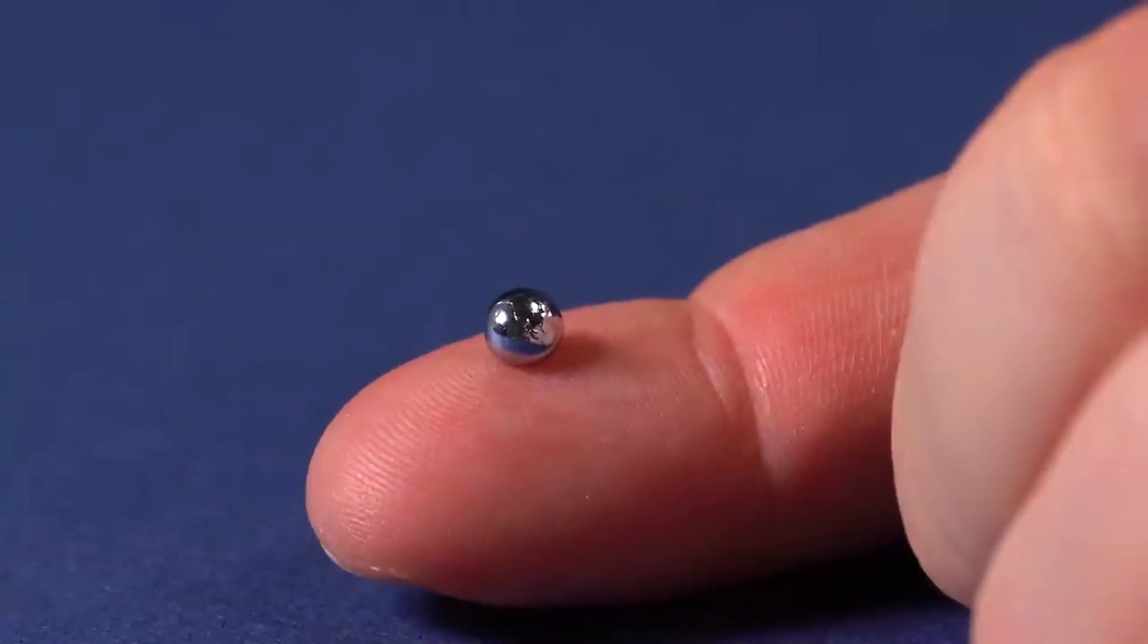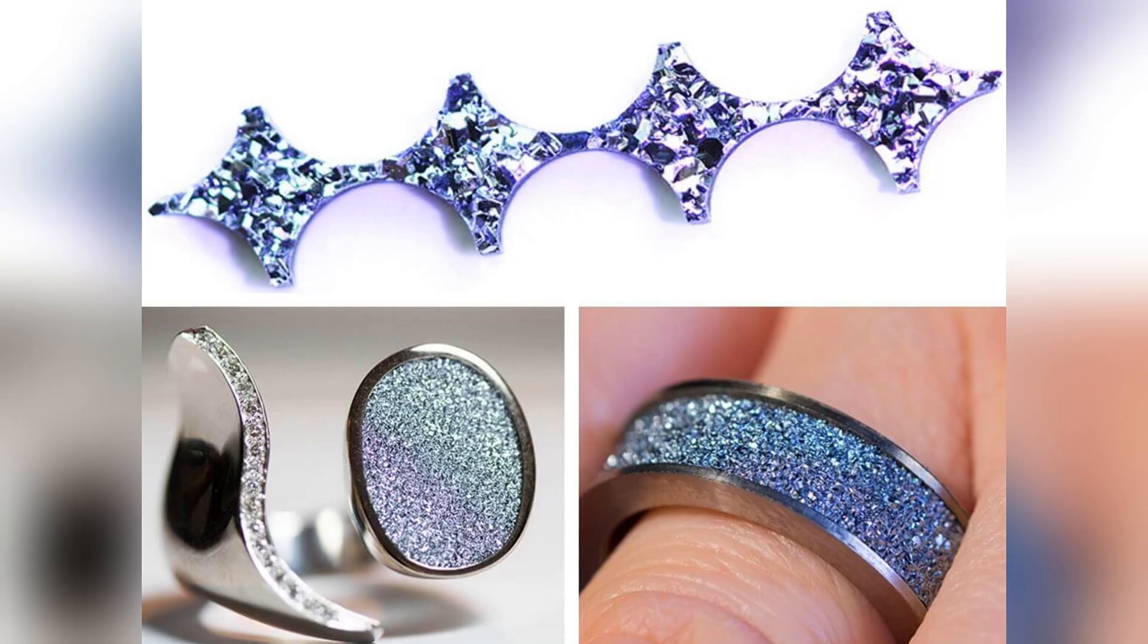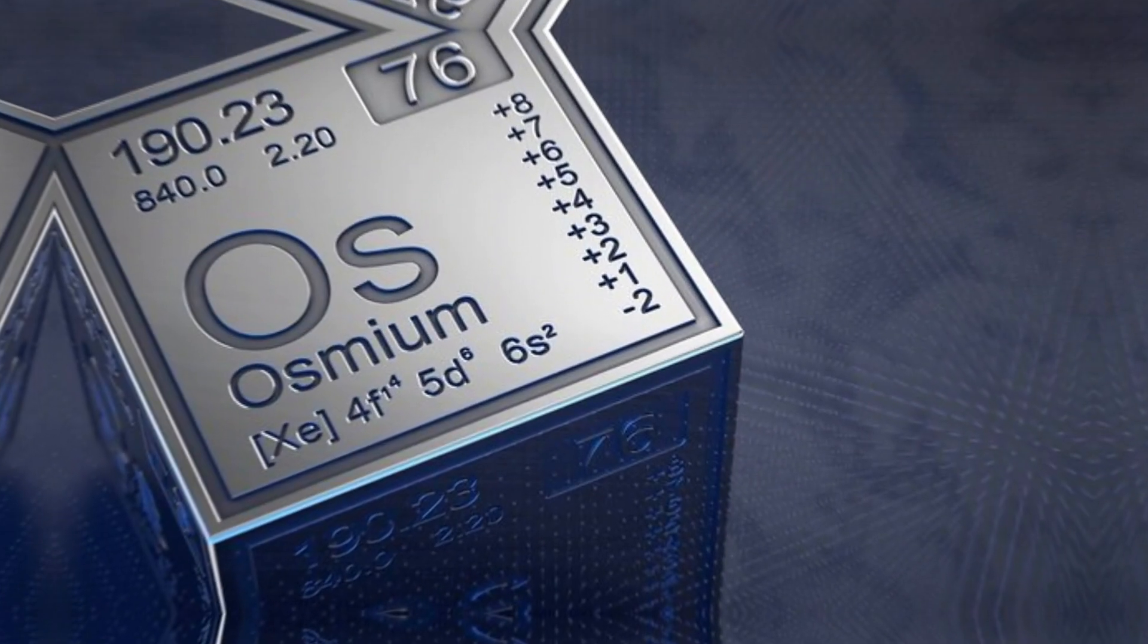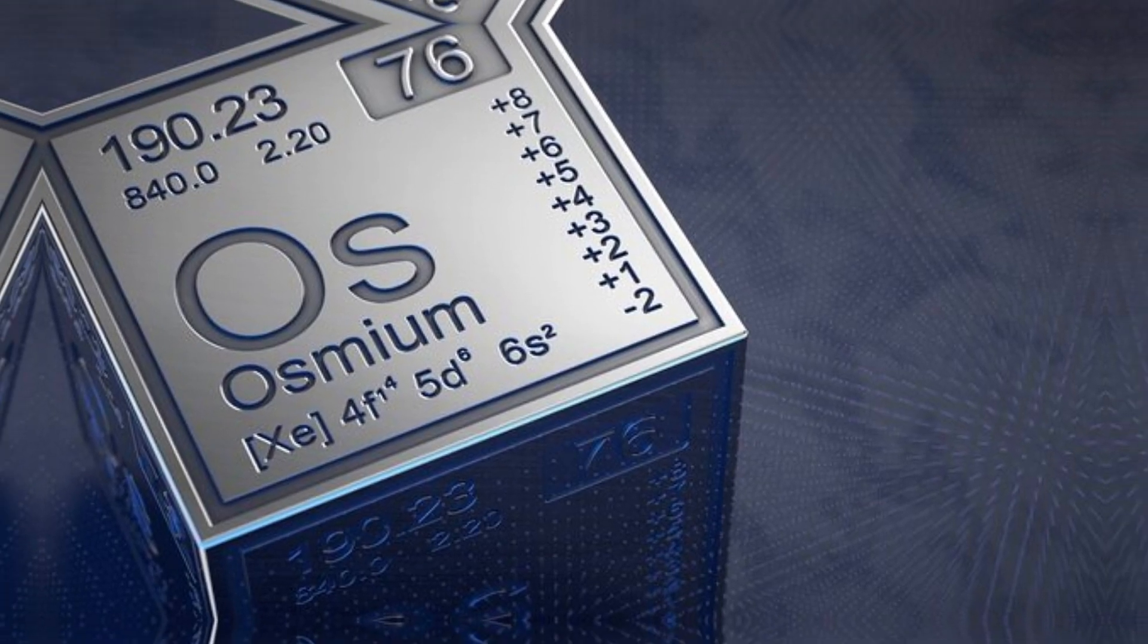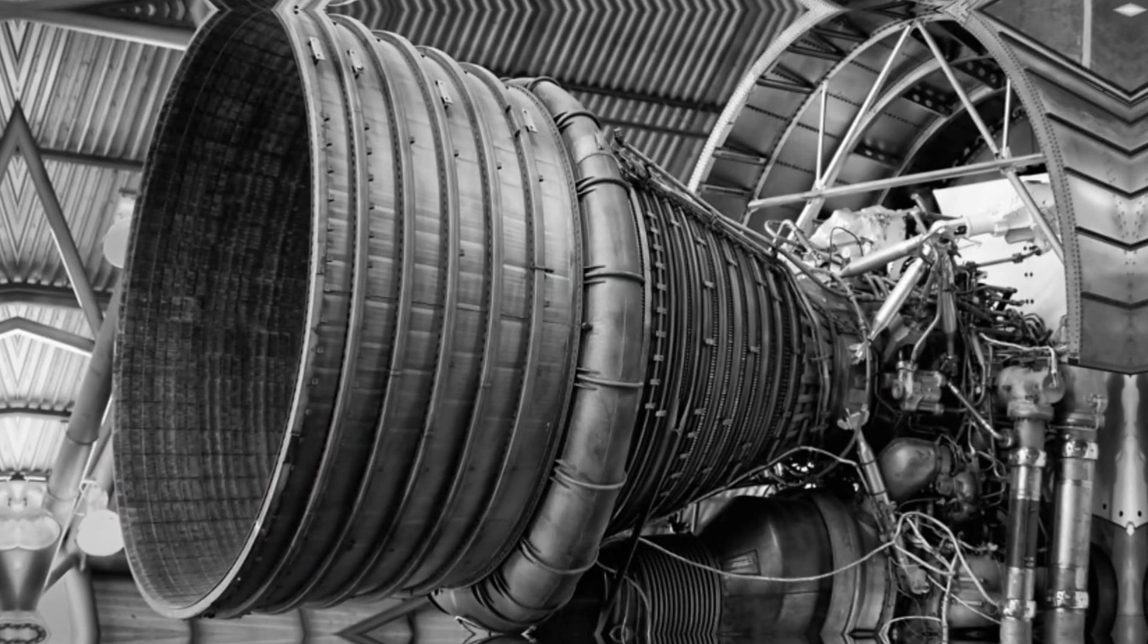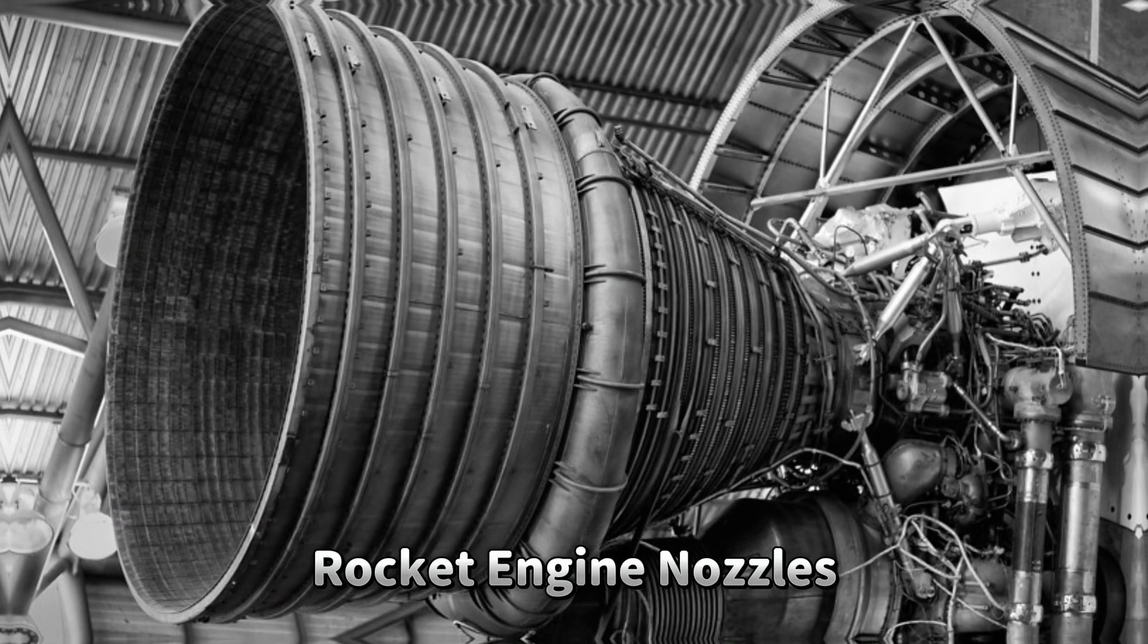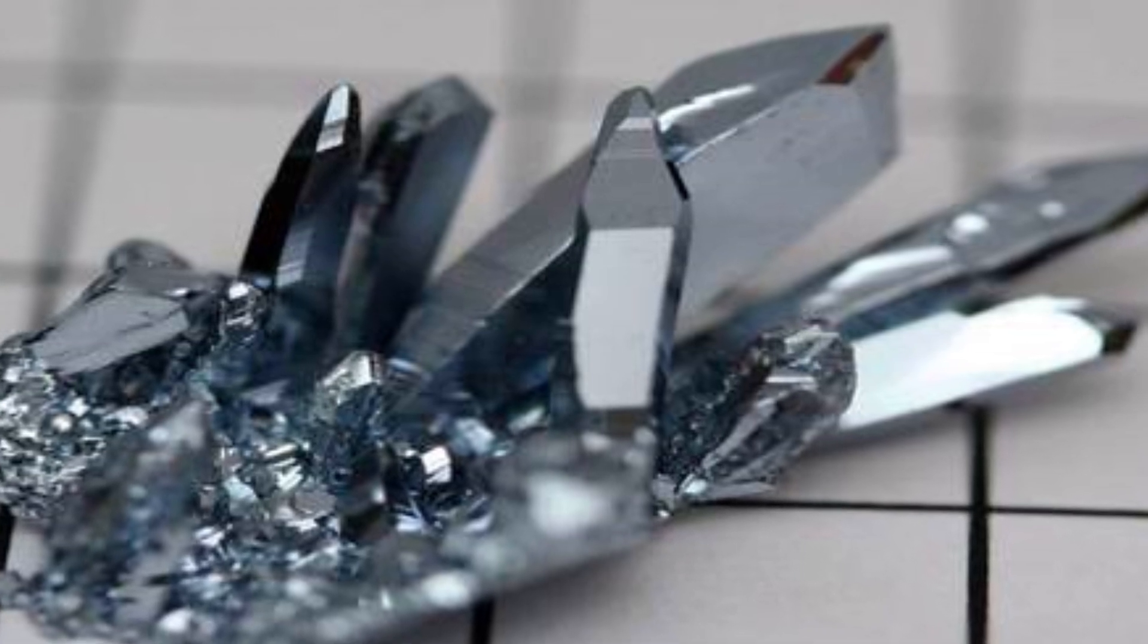Osmium finds application in the aerospace industry primarily due to its high density and strength. It is often alloyed with other metals to create materials that can withstand extreme conditions encountered in aerospace operations. Osmium alloys are used in components like rocket engine nozzles, turbine blades, and other structural elements of spacecraft and aircraft.